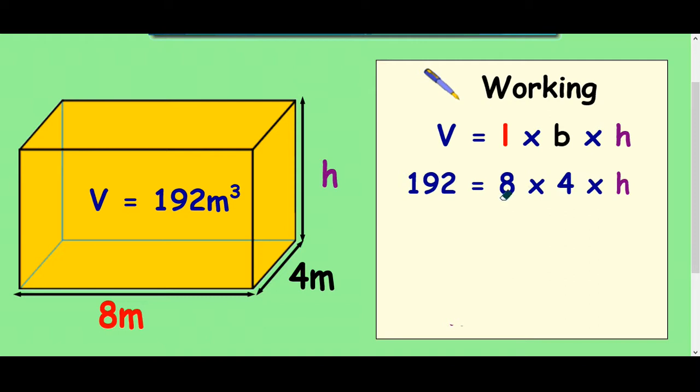Now we can definitely do this 8 times 4 part so we'll do that, 8 times 4 is 32. So I'm going to write it out again, 192 but instead of writing 8 times 4 I'm going to write 32 times h. So this is where we should think well how do I work out what 32 times something makes 192? What do I have to do with these two numbers to work out this? And hopefully most of you think I need to divide these two numbers.